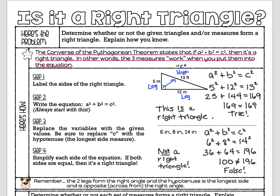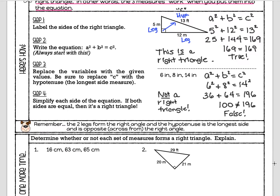To recap: you simply put your values into a² + b² = c². If the math works out and both sides are equal, it's a true statement and it is a right triangle. If you end up with a different number on each side of the equal sign, that's a false statement, and it is not a right triangle.